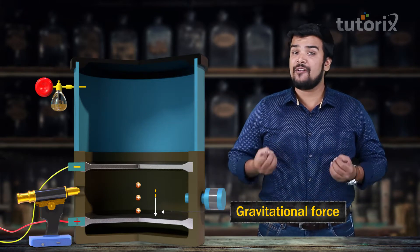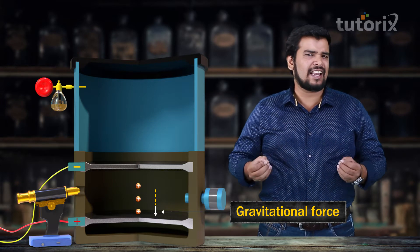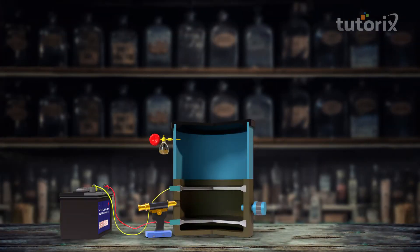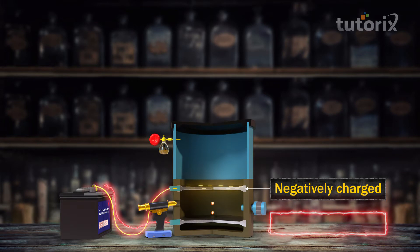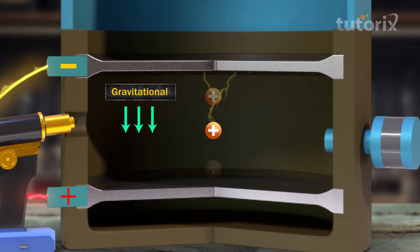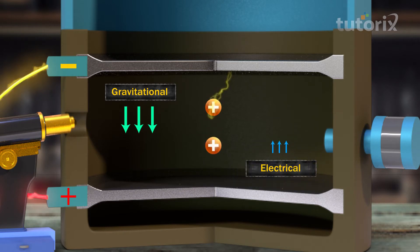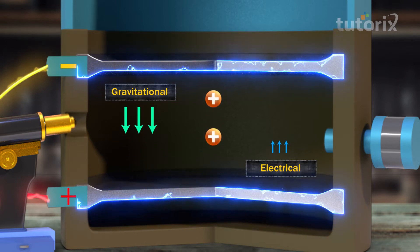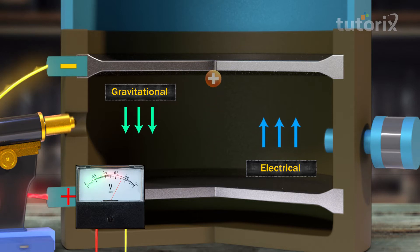While the voltage source was off, the oil droplets would simply fall down due to gravitational force. But what if we could make these oil droplets float in the air? When the power was turned on, the top plate gets negatively charged and the bottom plate gets positively charged. Since the oil droplets are positively charged, they get attracted towards the negatively charged plate, meaning the electrical force starts pulling these droplets upward. The electrical force was increased by increasing the potential difference between the plates, slowing the fall until eventually the oil droplets started floating in the air.